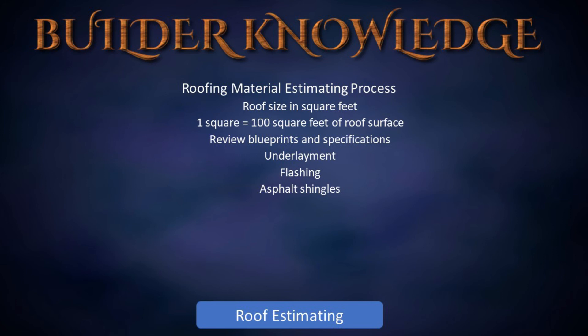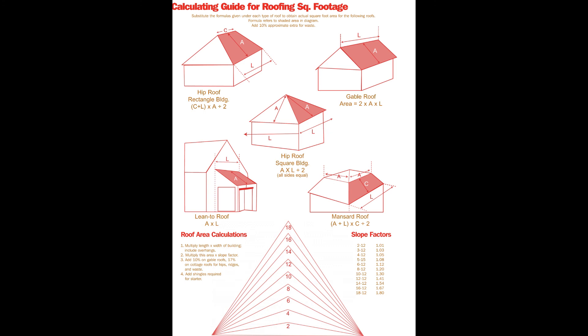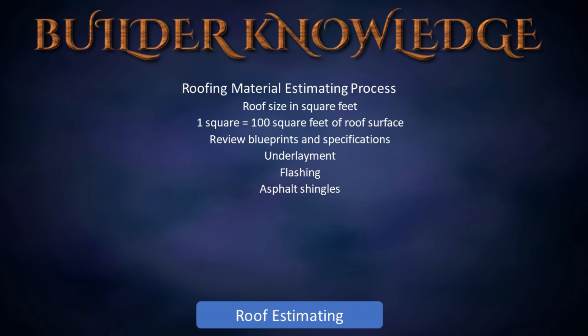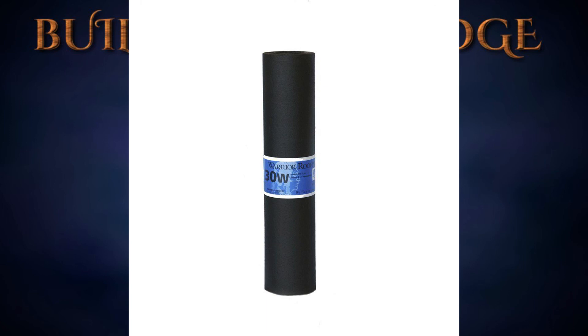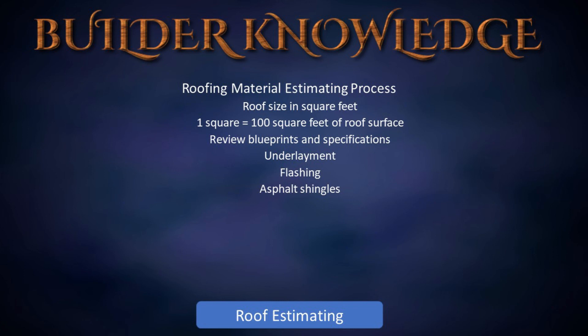Now let's cover the roofing material estimating process. First, we need to know the roof size in square feet — materials are estimated and sold by the square. One square equals 100 square feet of roof surface. Review blueprints and specifications to determine types of material and fasteners needed. Also determine what underlayment is required — rolls are usually 36 inches wide. A roll of 15-pound felt is 144 feet long; a roll of 30-pound felt is 72 feet long. After adding for two-inch overlap, one roll of 15-pound felt covers four squares (400 square feet) and one roll of 30-pound felt covers two squares (200 square feet).